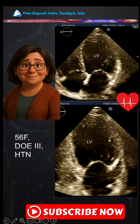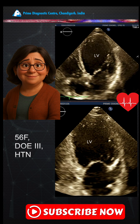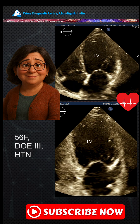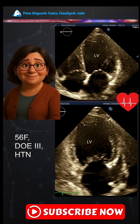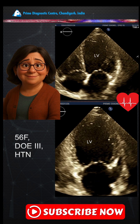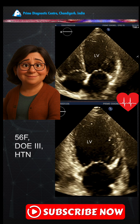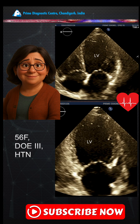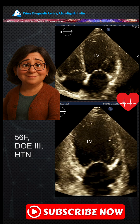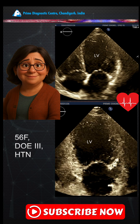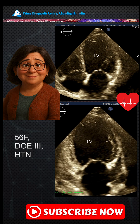Presenting a 56-year-old female who presents with dyspnea class 3 and is hypertensive. On an echocardiogram 4-chamber view, you see a dilated and hypokinetic LV. On the 2-chamber view, you see the LA and LV dilated with a hypokinetic LV, with an ejection fraction of around 28 to 30 percent.